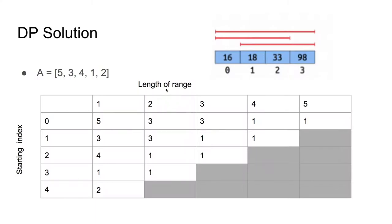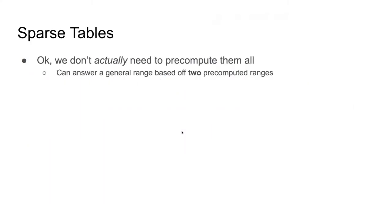The problem is n² is usually too large for most competitive programming applications — if n is greater than about 1,000 it won't work out. So, can we do better? The answer is yes, with sparse tables.